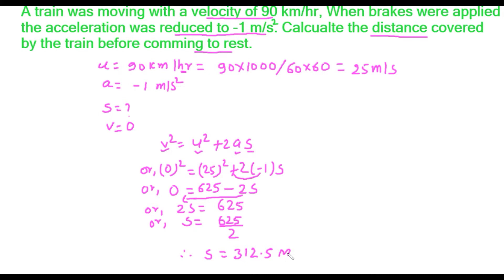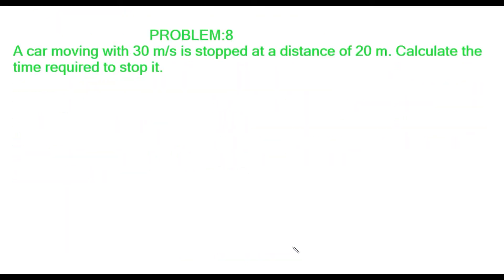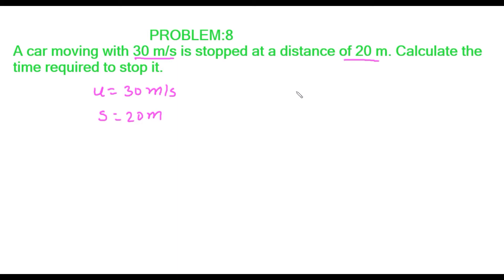Let us look at the next problem, problem number 8. A car moving with 30 meters per second is stopped at a distance of 20 meters. Calculate the time required to stop it. In this problem, the initial velocity u is 30 meters per second, and the distance is given as 20 meters. We have to find the time.